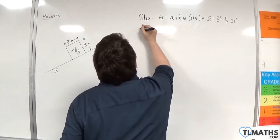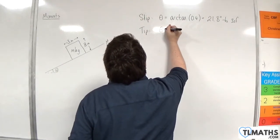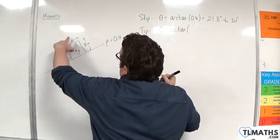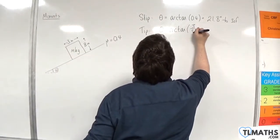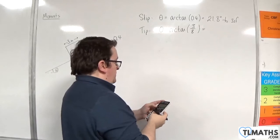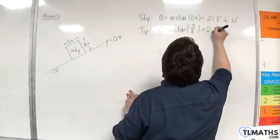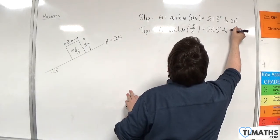It will be on the point of tipping when theta is equal to arctan of 3 over 8. So arctan of 3 over 8 is 20.6 degrees to 3 sig fig.